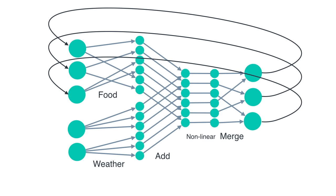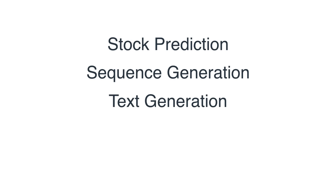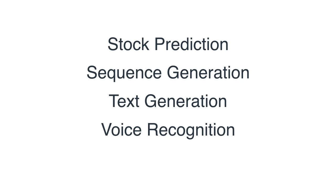Examples include stock prediction — the price of a stock today depends a lot on the price yesterday and two days ago. There's also sequence generation, like text generation: when you're typing on your phone and it guesses the next word, that depends a lot on the previous words. Even for letters, guessing the next letter depends on what just came before. In voice recognition, you have the sound coming in plus the previous words — two sources of information to guess the next word you said.